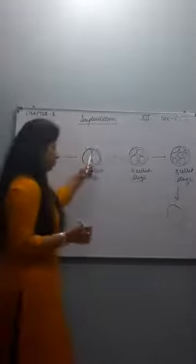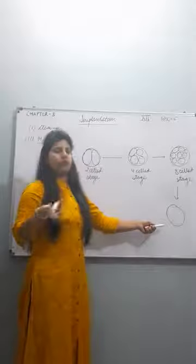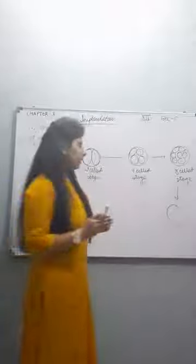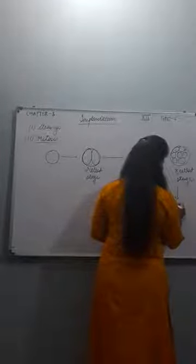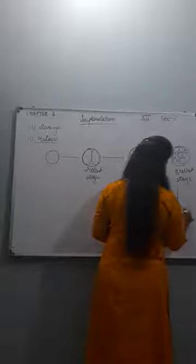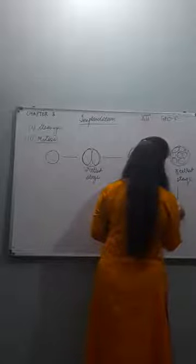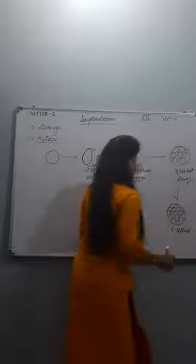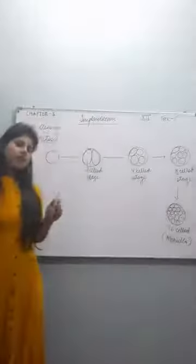The overall zygote size remains the same throughout. The size of the inner cells gets reduced. This is the 16-cell stage.